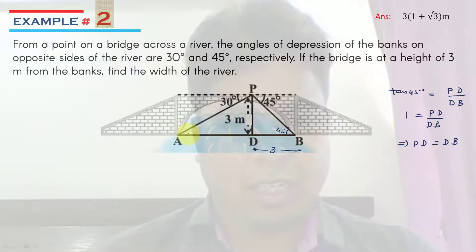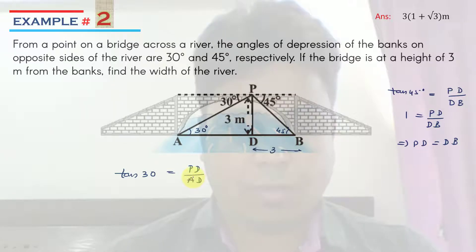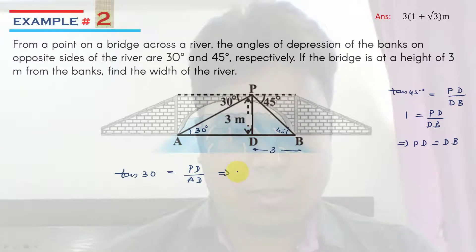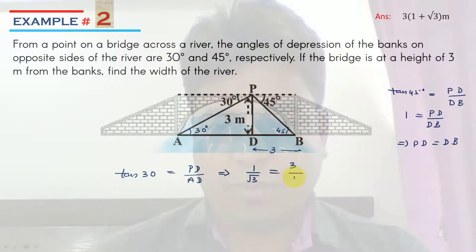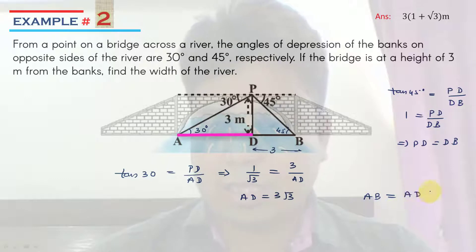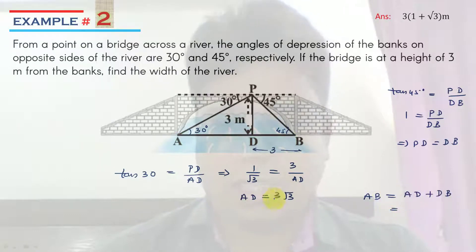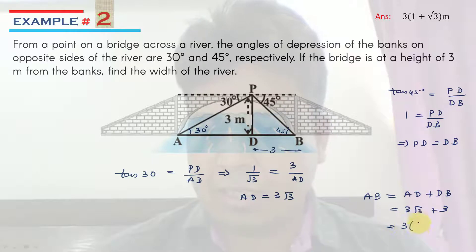Now since this angle is 30°, the alternate angle is also 30° since AD is parallel to the base. Applying tan 30° equals PD upon AD: tan 30° is 1 upon root 3, and PD equals 3, so 1/root 3 equals 3 upon AD. Therefore AD equals 3·root 3. Hence AB equals AD plus DB, where AD is 3·root 3 and DB equals DV equals 3. So the answer is 3·(root 3 + 1).